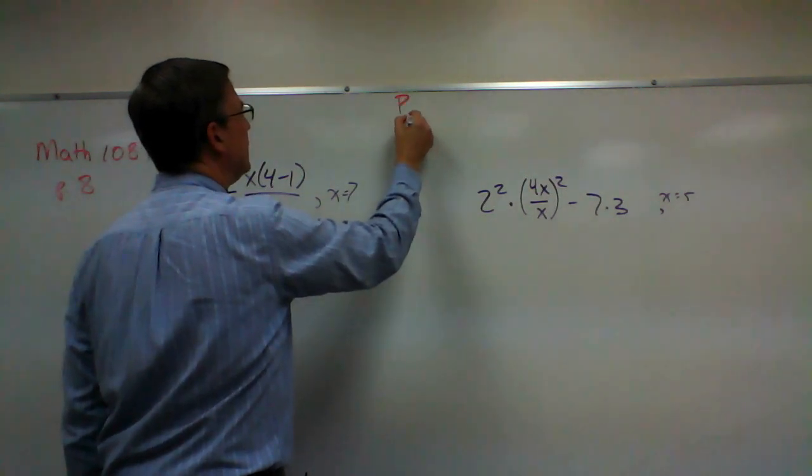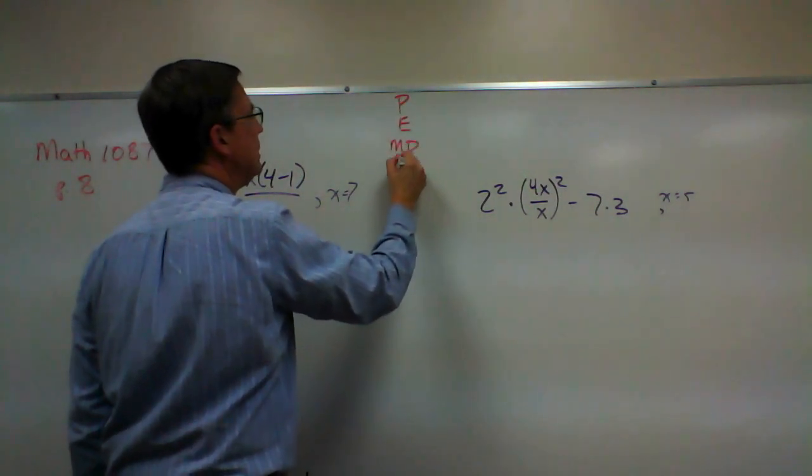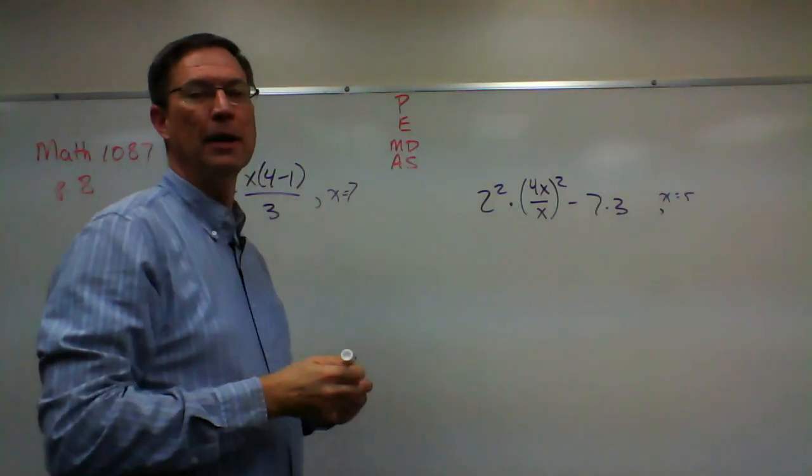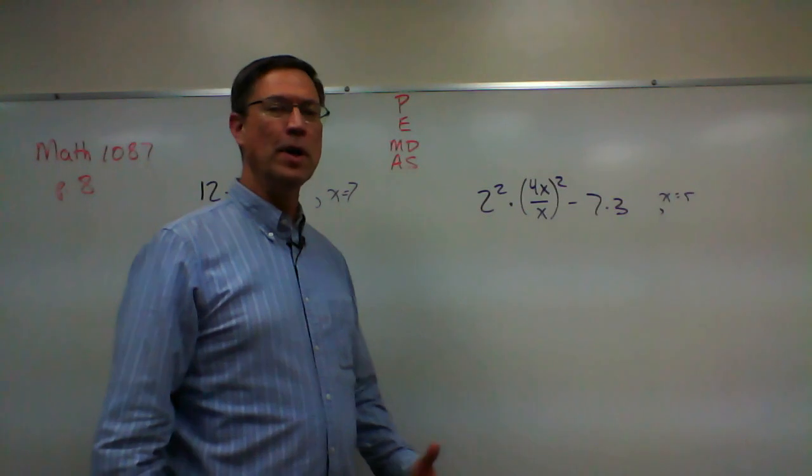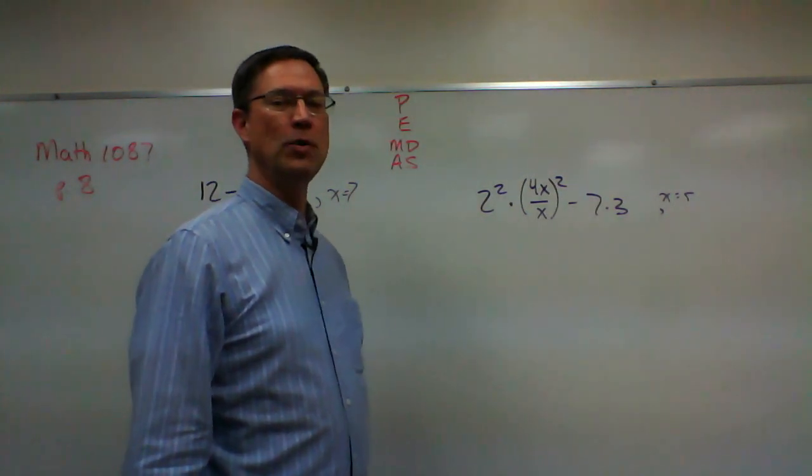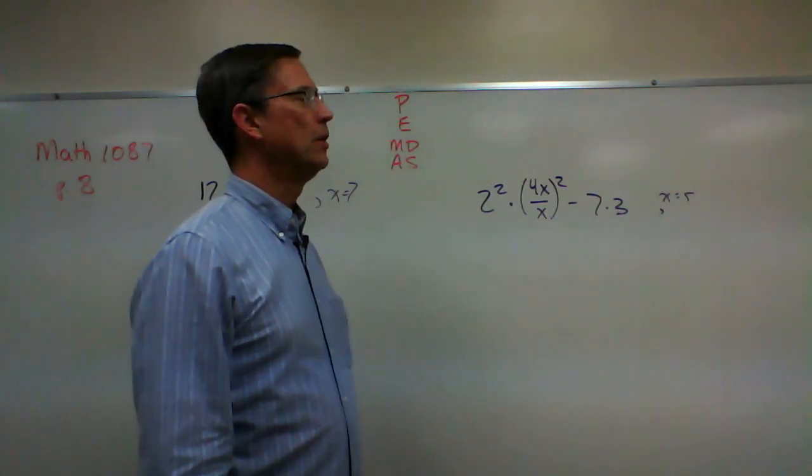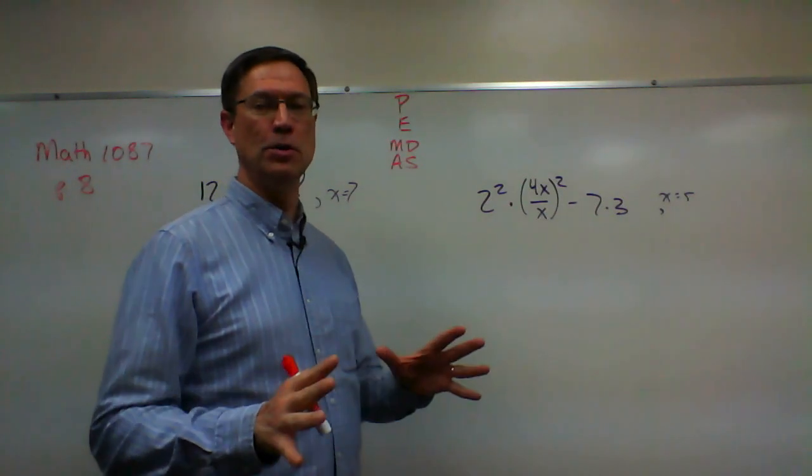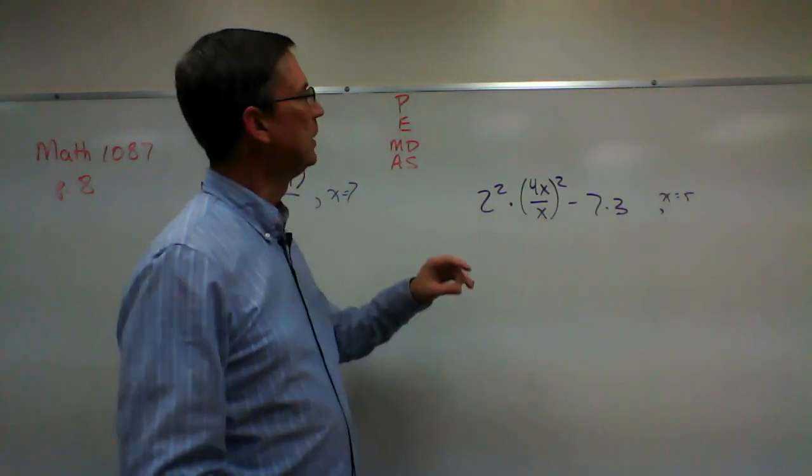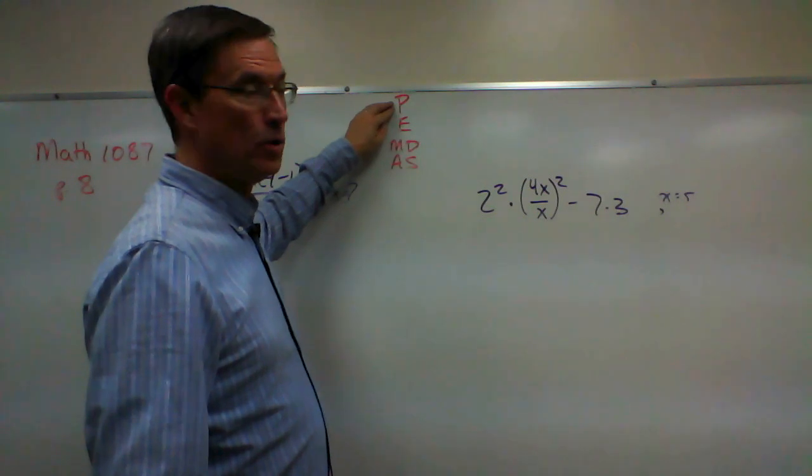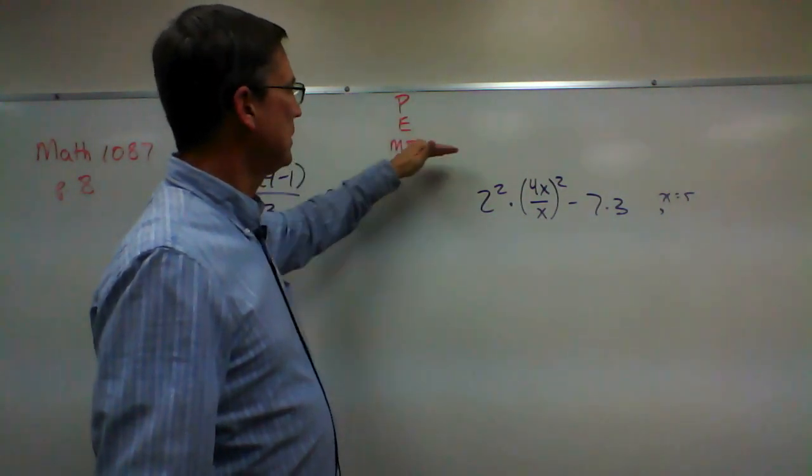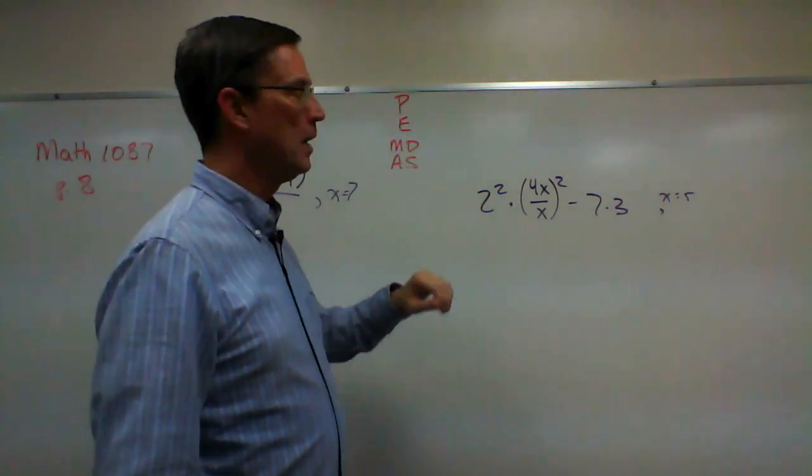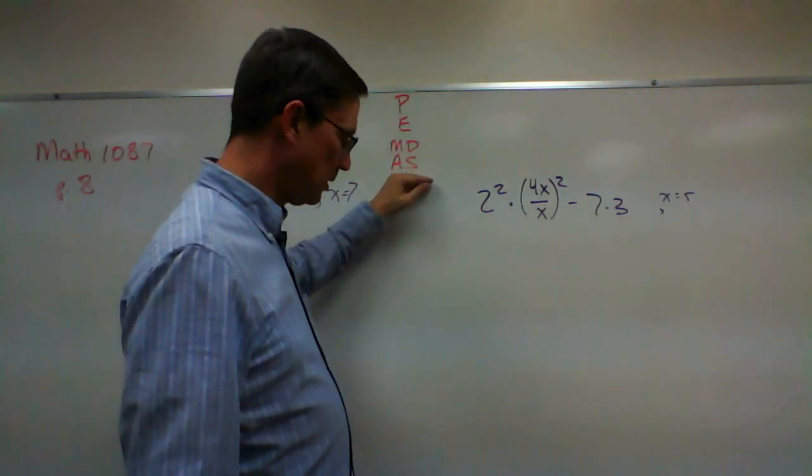Please excuse my dear Aunt Sally. So picture some heavyset funny aunt who just dresses crazily and you're telling your friends please excuse my dear Aunt Sally. But it reminds us that we do parentheses first, then any exponents, and then in the next step you do all the multiplying and dividing, and the last step is adding and subtracting.